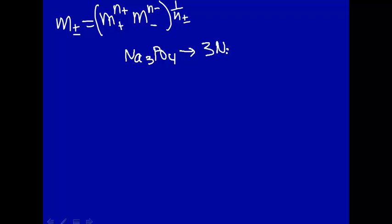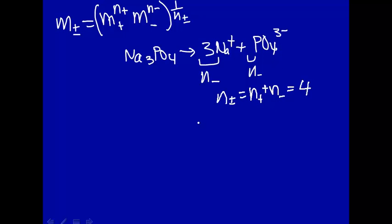Na3PO4 solvated, that's 3 Na plus, plus 1 PO4 3 minus. So this is N plus, the 1 there is N minus. N plus minus, remember is defined as N plus plus N minus, that's equal to 3 plus 1 is 4.